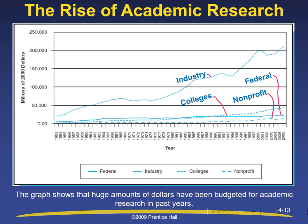The Rise of Academic Research: The graph shows that huge amounts of dollars have been budgeted for academic research in past years. The y-axis goes from $0 to $250,000. Industry received the highest academic research funding, followed by colleges, followed by the federal government, and lastly non-profit organizations.